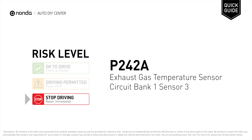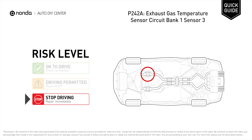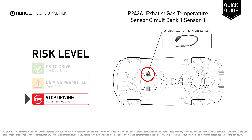P242A is a diagnostic trouble code for Exhaust Gas Temperature Sensor Circuit Bank 1 Sensor 3. Under this circumstance, stop driving and repair your vehicle immediately. It indicates that the PCM has detected a problem with the Exhaust Gas Temperature Sensor Circuit.